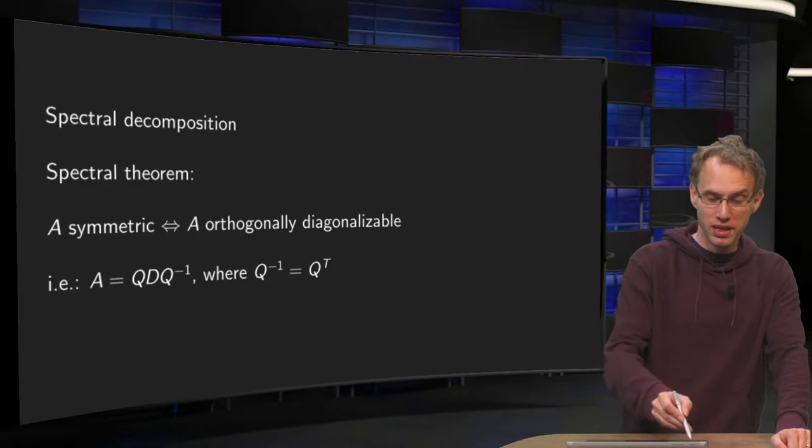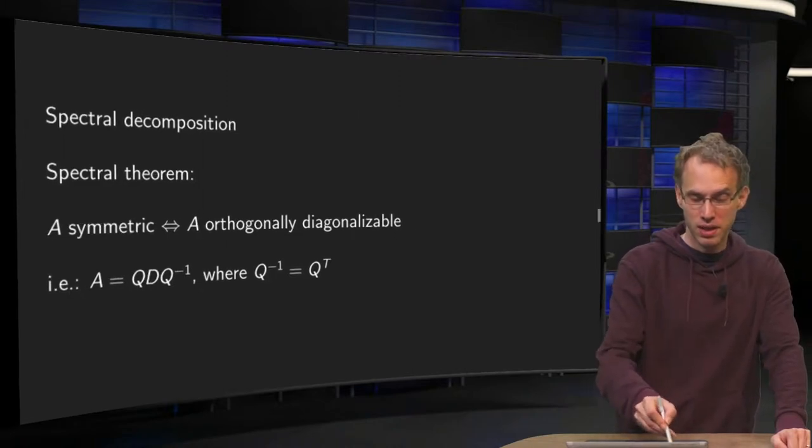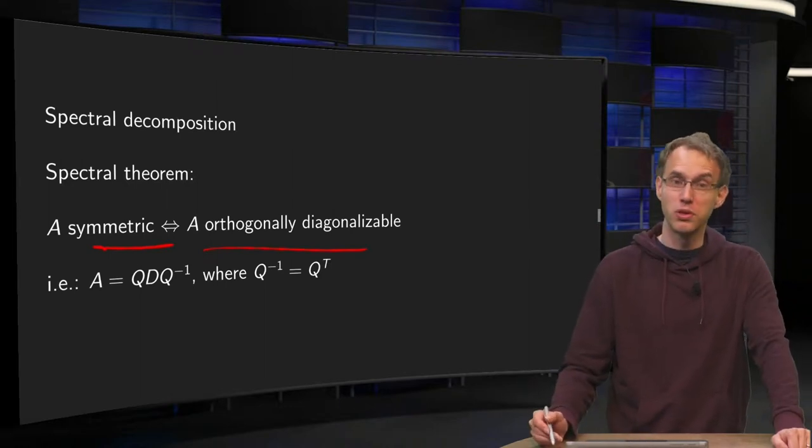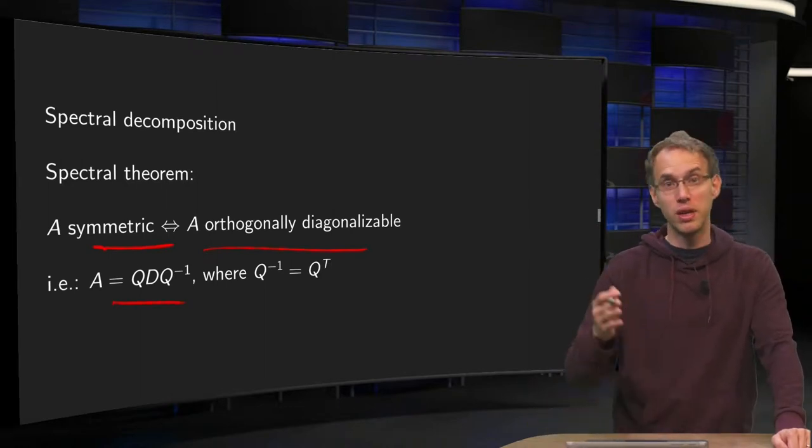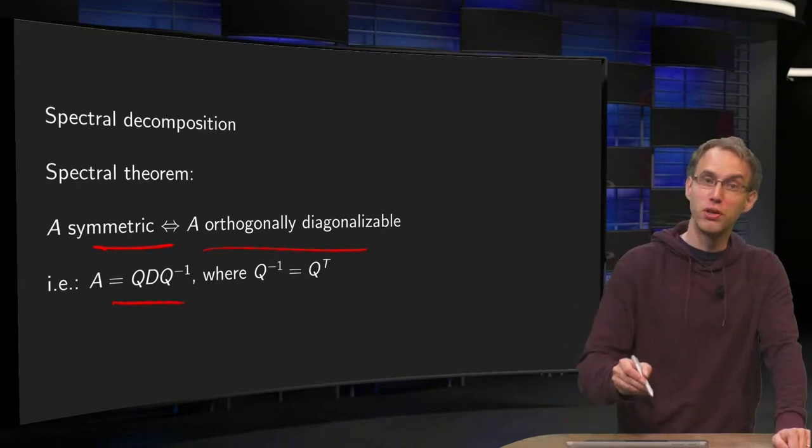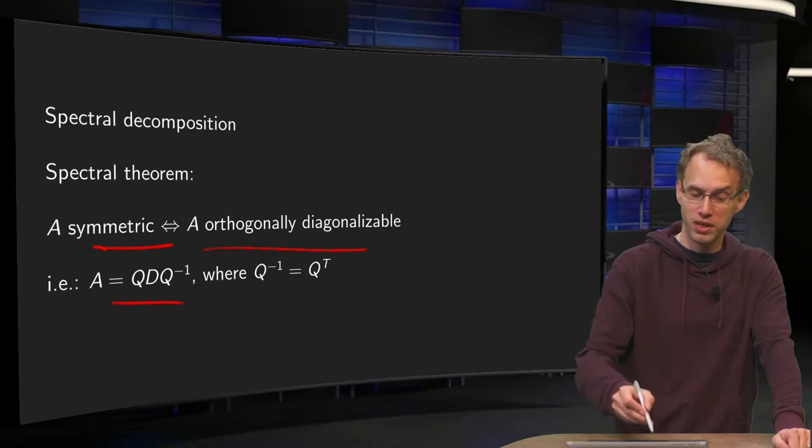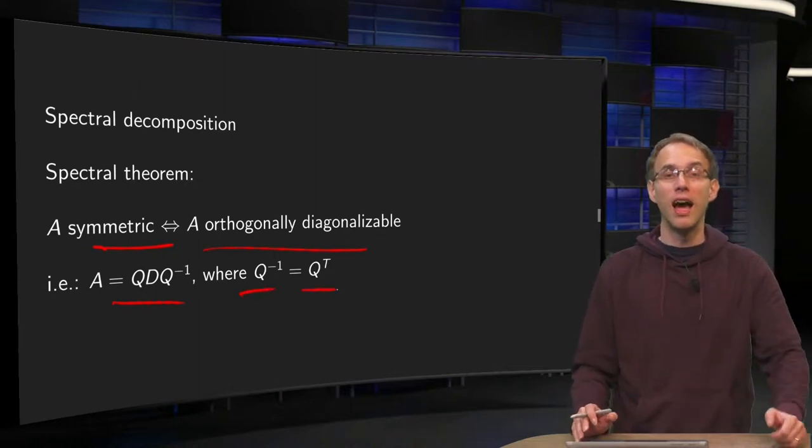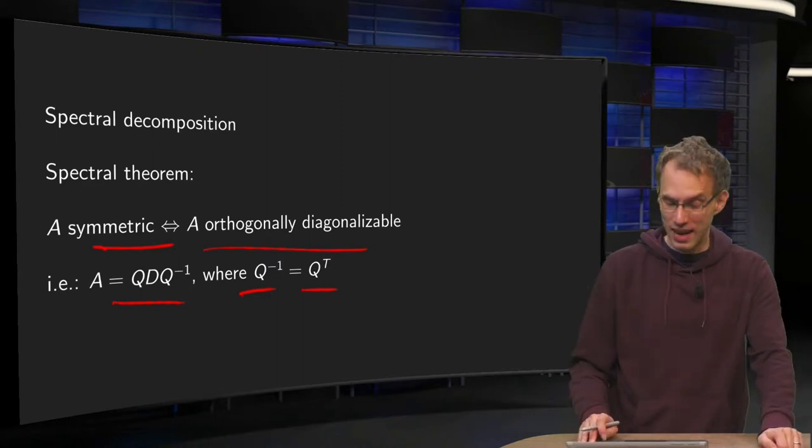The Spectral Theorem says that A is symmetric if and only if A is orthogonally diagonalizable. So that means we can write A as Q times D times Q inverse, which is a special property for our Q. Our Q is an orthogonal matrix, so Q inverse equals Q transpose. And we can use this to decompose our A.